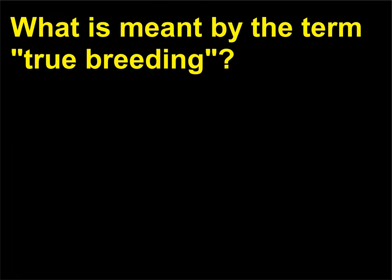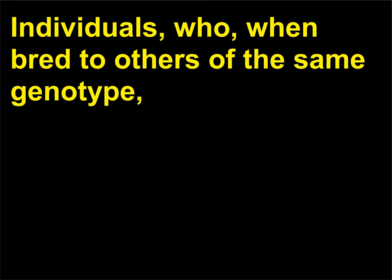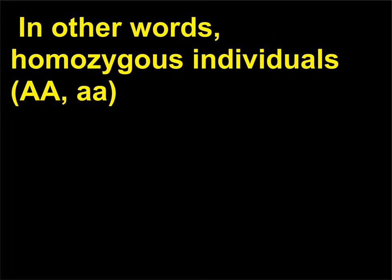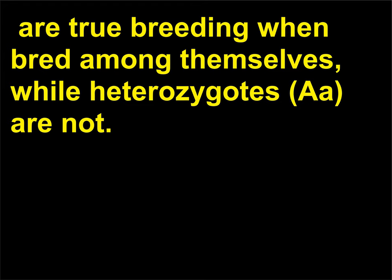What is meant by the term true breeding? Individuals who, when bred to others of the same genotype, produce only offspring of that genotype, are called true breeding. In other words, homozygous individuals (AA) are true breeding when bred among themselves, while heterozygotes (Aa) are not.